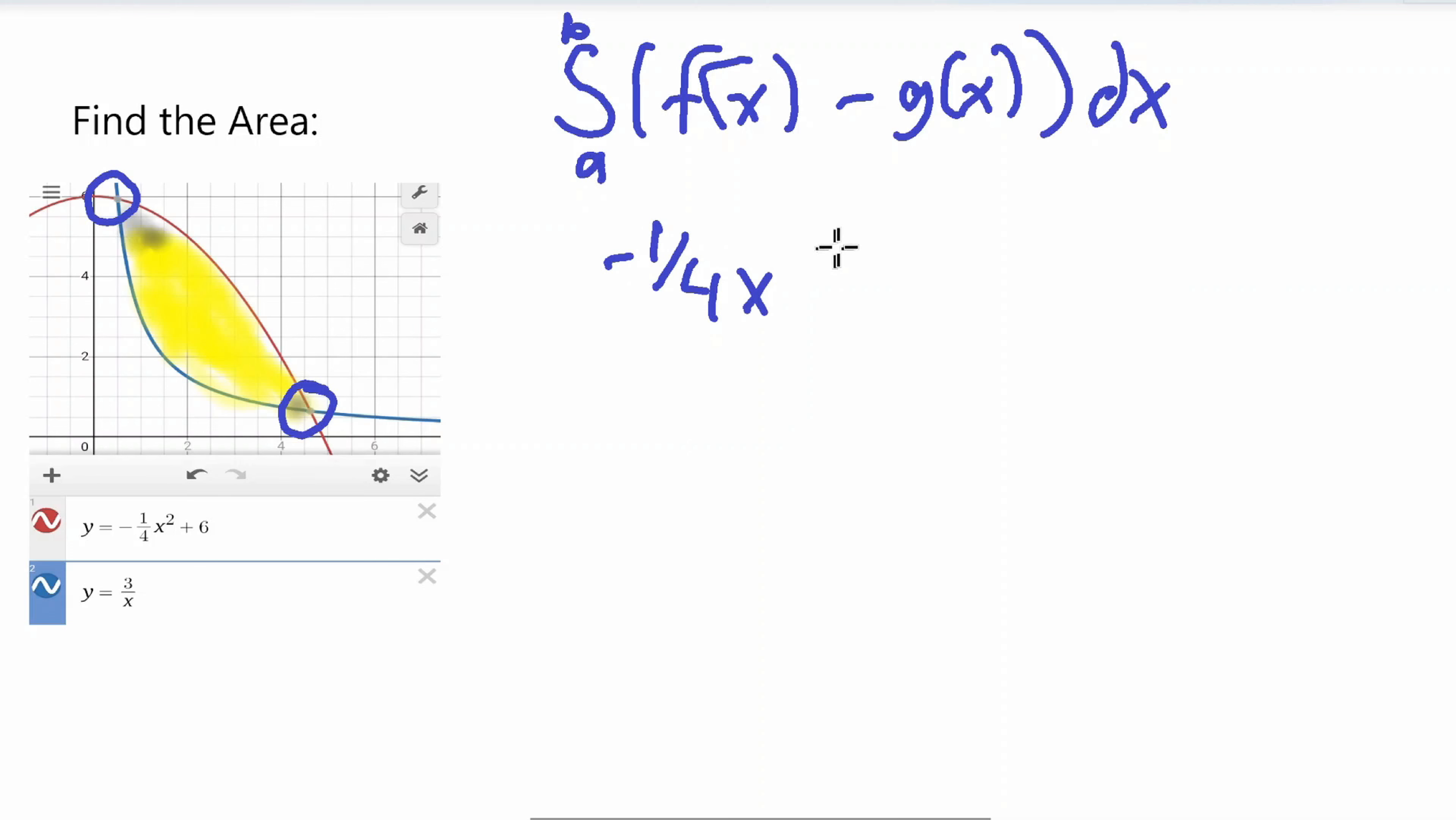So how will we find those points? If we set the equations equal to each other, we will find where they meet up. Okay, so let's set it equal to each other. All right, so now what I'm going to do, there are various methods to do this to find the x's, but I am going to subtract 3 over X to both sides.